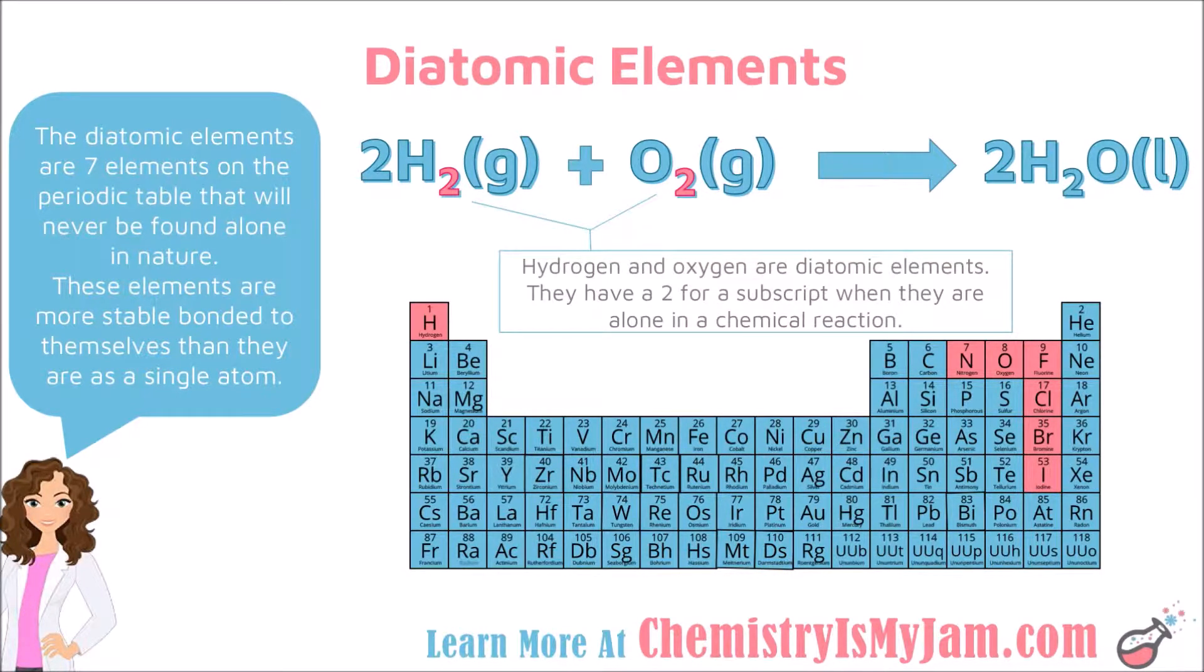For us, that means that when you see these elements in a chemical reaction, if they are not bonded to another atom, they should get a 2 for a subscript. That means that this is not just one oxygen atom found by itself. It is a molecule made up of two atoms, two oxygen atoms, because oxygen is one of the diatomic elements. It is more stable bonded to an identical atom of itself than it is alone.